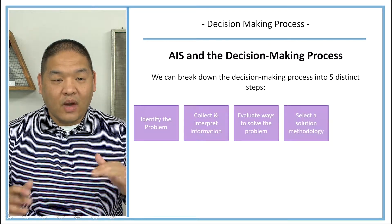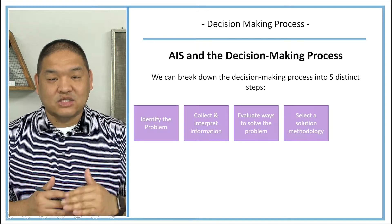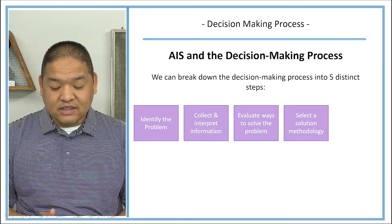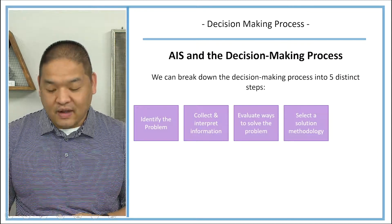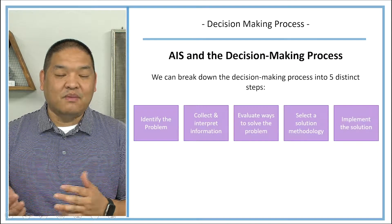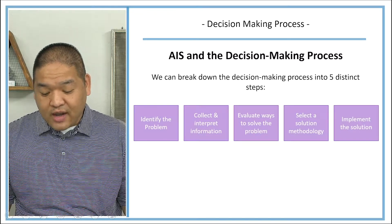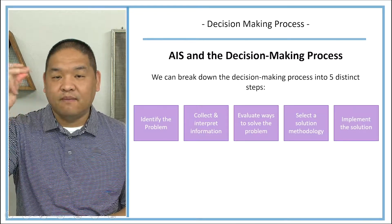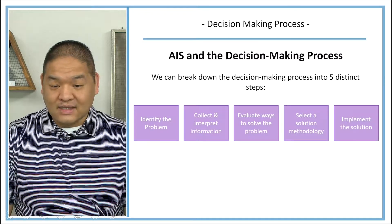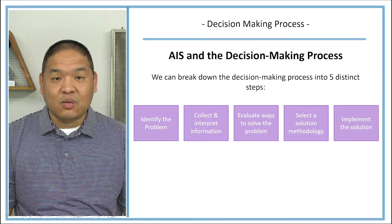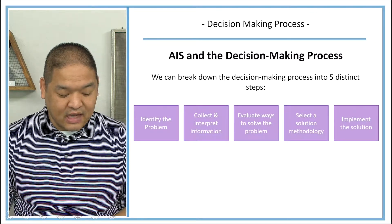Once the manager understands and evaluates the different ways to solve the problem, they need to select a solution methodology — how are we going to go about solving this problem — and then implement that solution. Sometimes decisions are made quickly, and sometimes they are not. It's a process to make that decision, and it can take a while for that solution to be implemented.